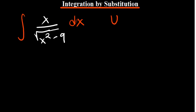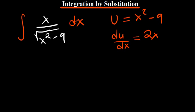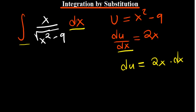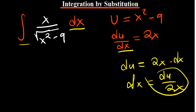What you do is set what is in the denominator equal to u. So let our u be equivalent to x squared minus 9. Our du/dx is going to be 2x. Our goal is to make dx the subject so we can plug it in, since we are determining the integral with respect to x. If we cross-multiply, du is going to be equivalent to 2x multiplied by dx, and therefore dx is going to be equivalent to du divided by 2x.